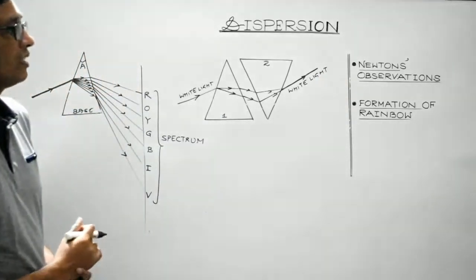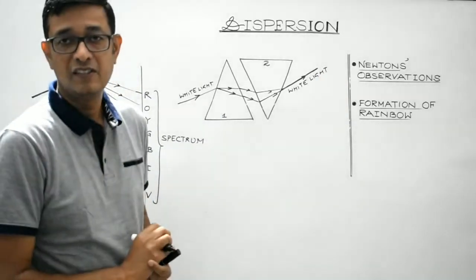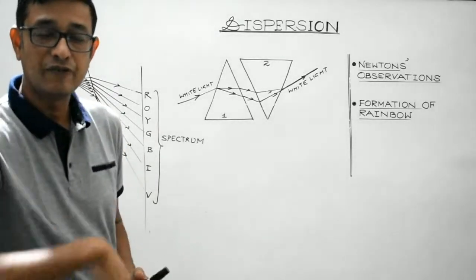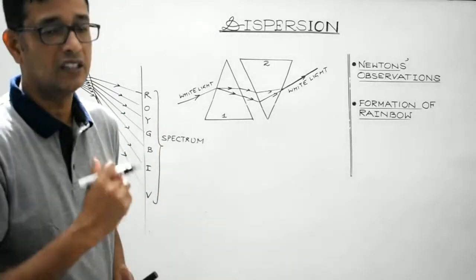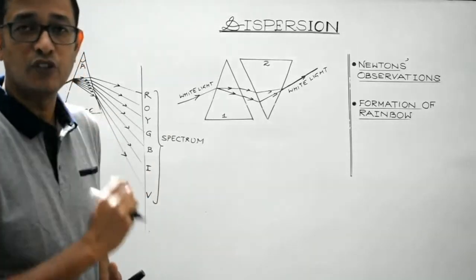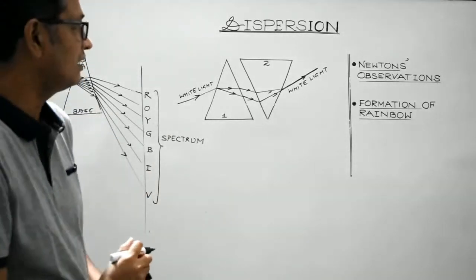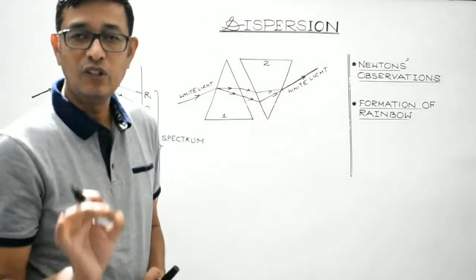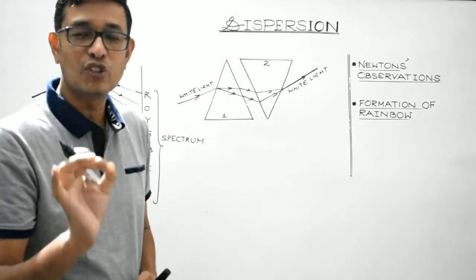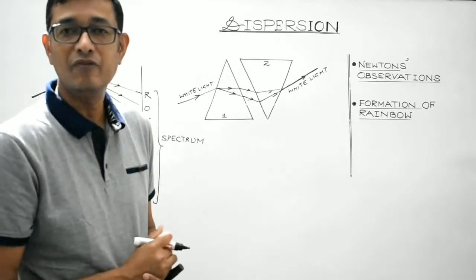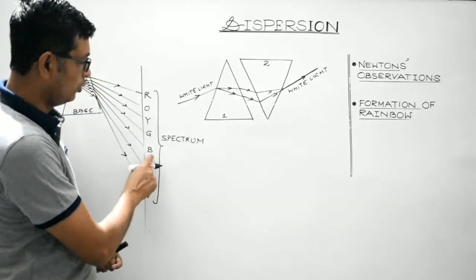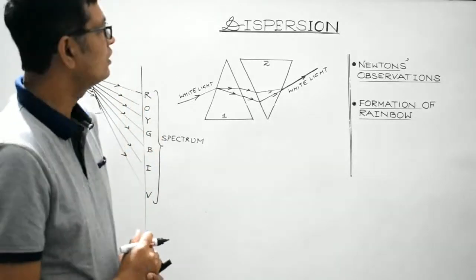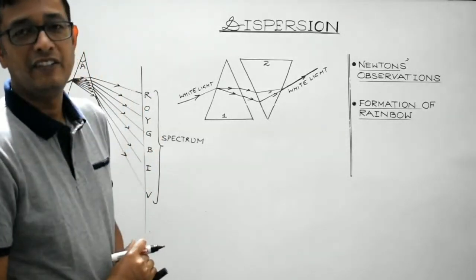So what Newton concluded was: first, the spectrum of colours of white light cannot be further split into other colours. Second, and very importantly, white light is composed of only 7 constituent colours — namely violet, indigo, blue, green, yellow, orange, and red. This was the observation made by Newton.